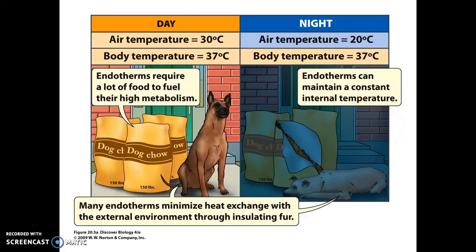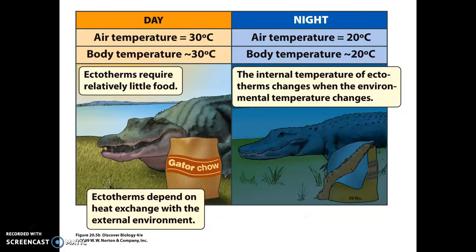Now to maintain body temperature at a set point requires a lot of energy, so endotherms need to get that energy from the food that they eat. This is why mammals and birds have to eat regularly throughout the day — often several meals a day — to maintain their caloric intake. Conversely, a reptile of equivalent size would not need to eat as often; they are not spending their energy maintaining their body temperature. But ectotherms are limited to the environments that they can live in — you aren't going to find many reptiles and amphibians native to Canada and Alaska.